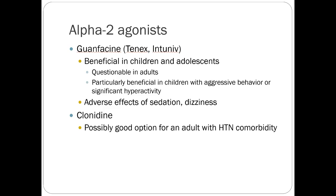The alpha-2 agonist guanfacine — brand names Tenex or Intuniv — comes as an immediate release and extended release product. These work in the CNS and are thought to alter the way norepinephrine is processed, working on that norepinephrine pathway. They're thought to be beneficial in children and adolescents, with questionable use in adults due to limited studies. Children with aggressive behavior or significant hyperactivity might respond well, as stimulants can sometimes exacerbate those effects. The main adverse effect is sedation.